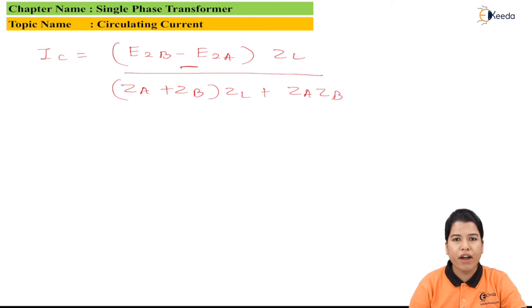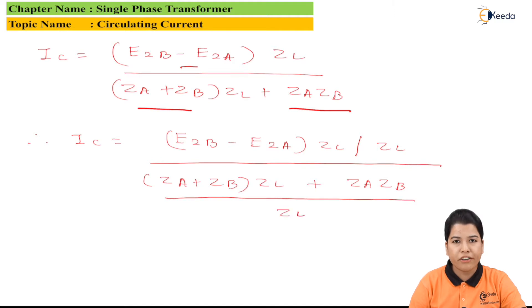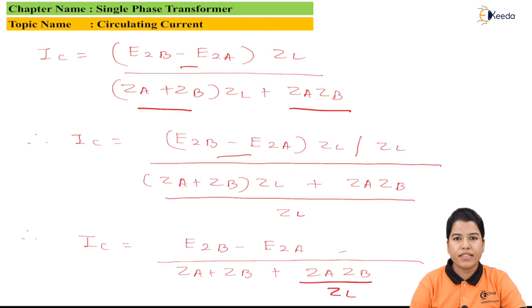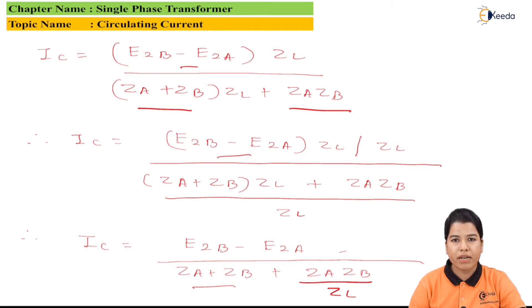If we divide the numerator and denominator by ZL, we get IC = (E2B − E2A) divided by (ZA + ZB + ZA × ZB / ZL).